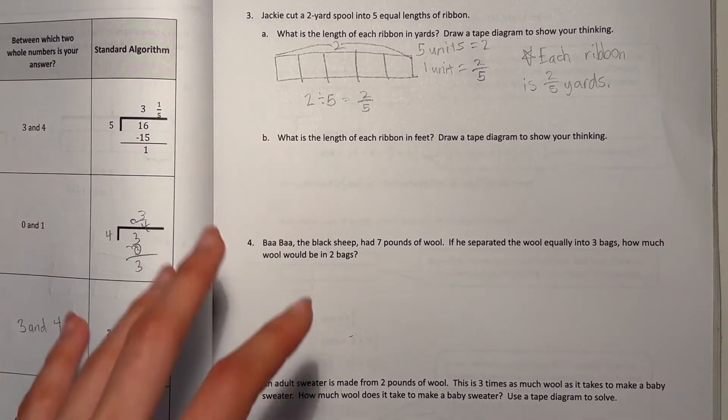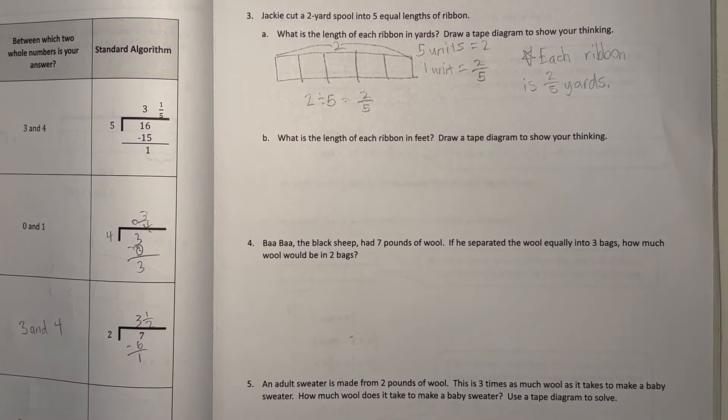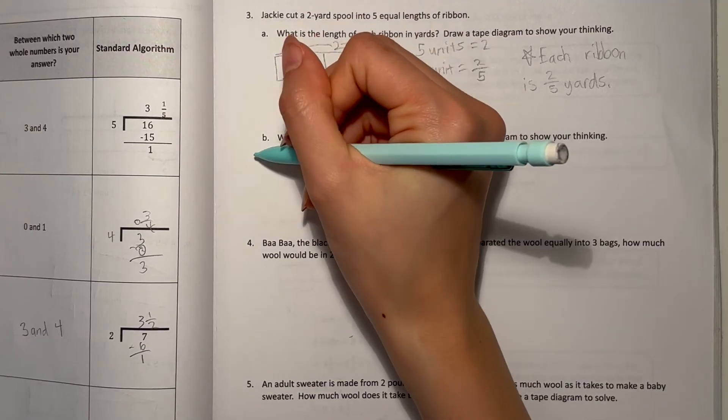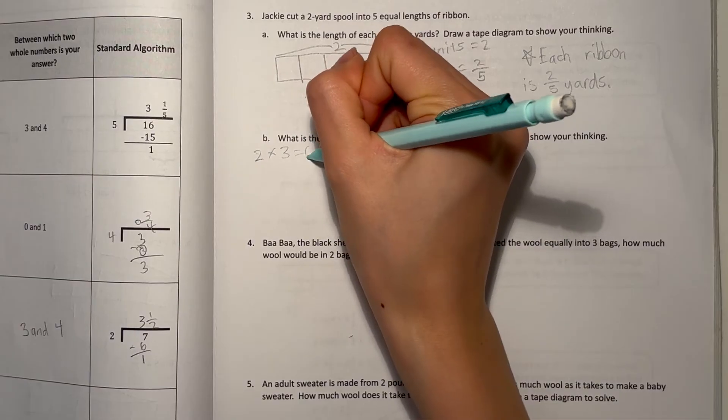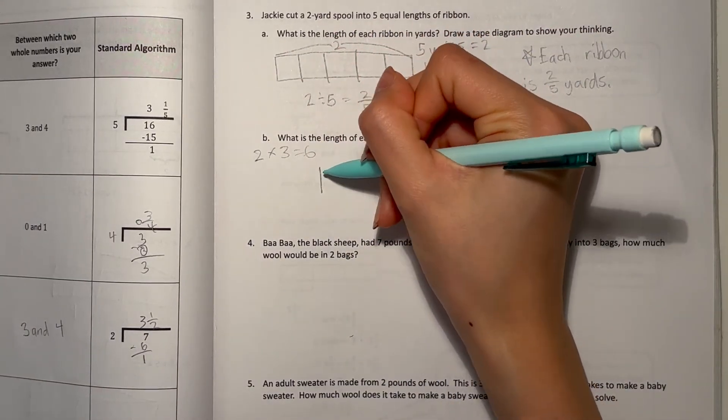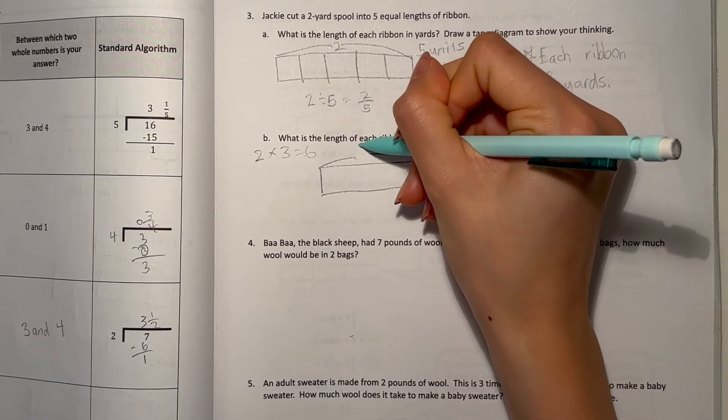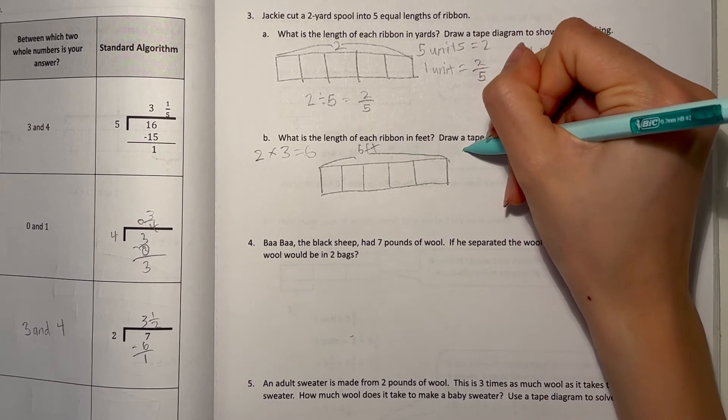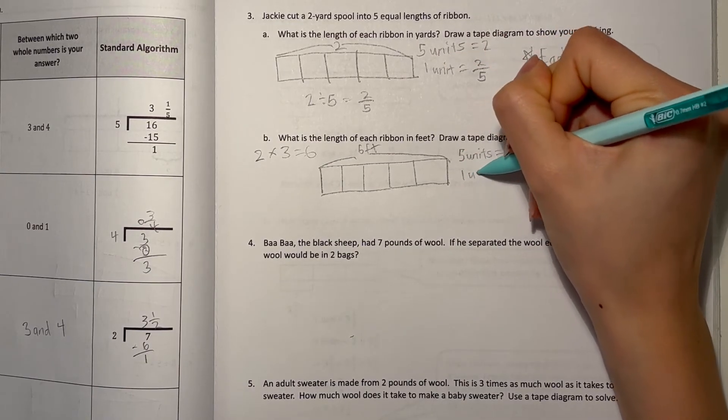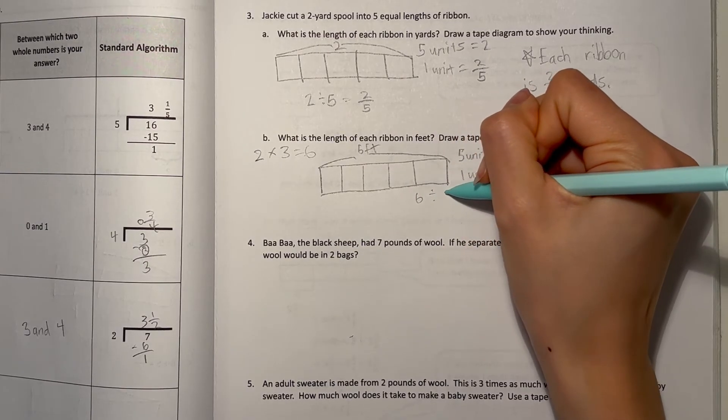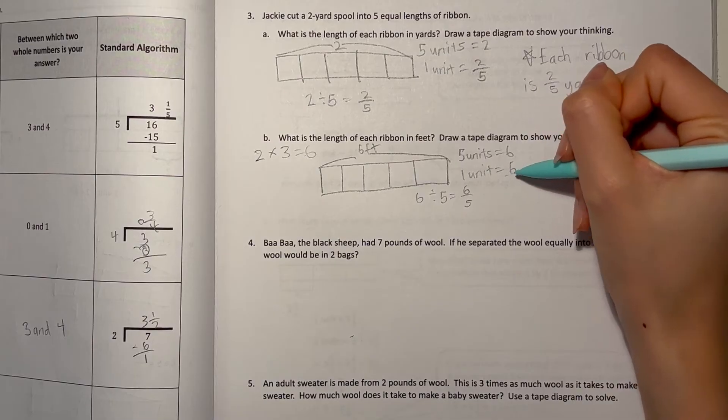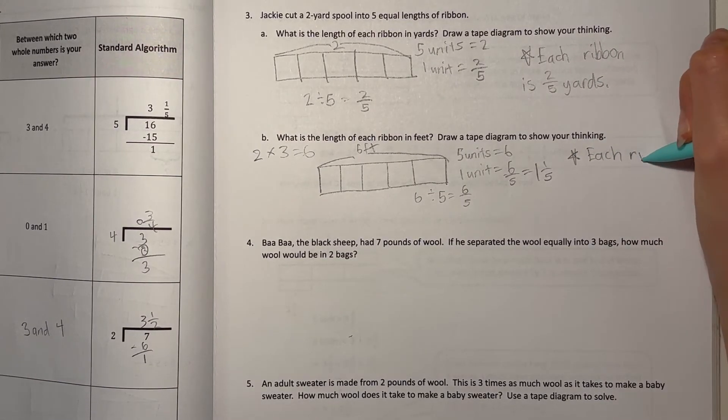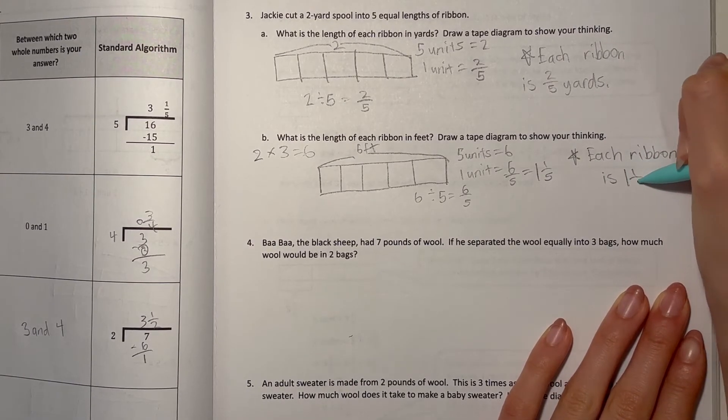B is asking, what is the length of each ribbon in feet? Draw a tape diagram to show your thinking. So in feet, we know in each yard, there are 3 feet. So, we have 2 yards converted to feet, multiplied by 3, that would be 6 feet. So our tape diagram would now look like this, 6 feet, and still being divided into 5 pieces. So 5 units equals 6, then 1 unit is 6 divided by 5, which is 6 over 5, or 1 and 1 fifth. So that means each ribbon is 1 and 1 fifth feet.